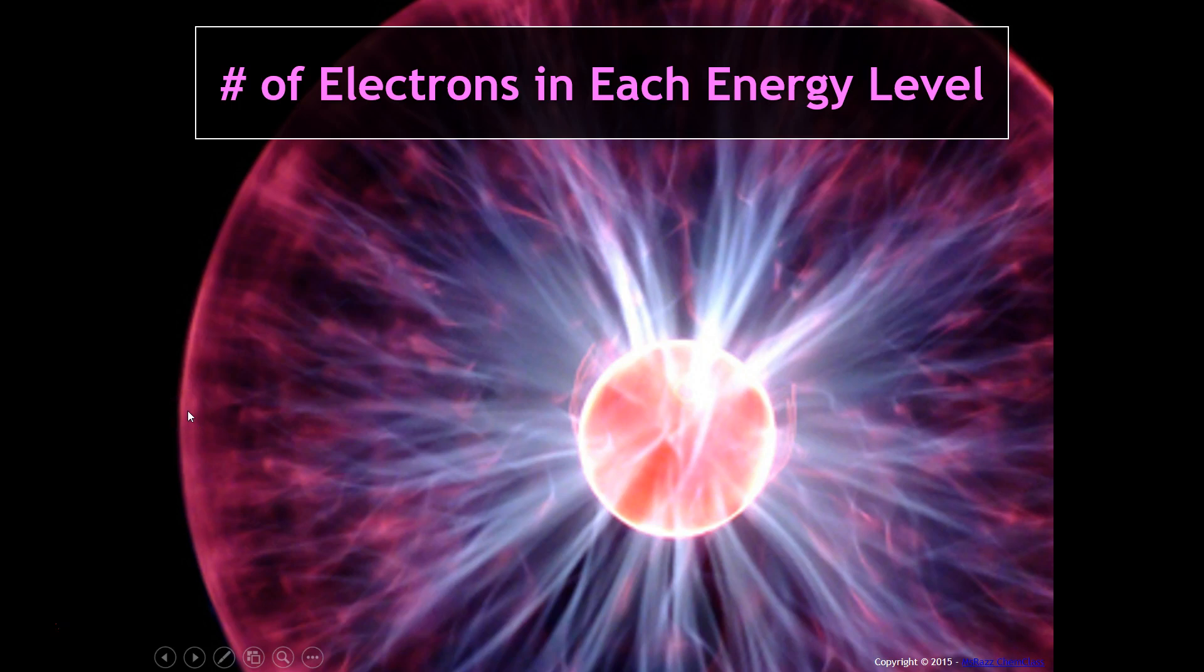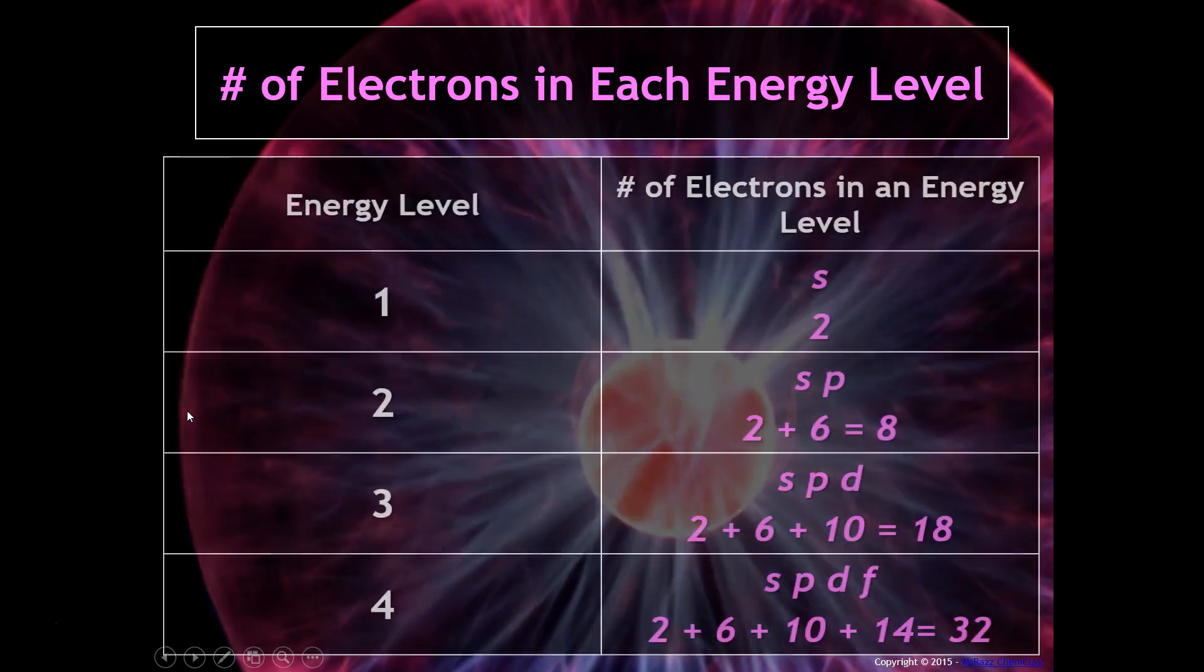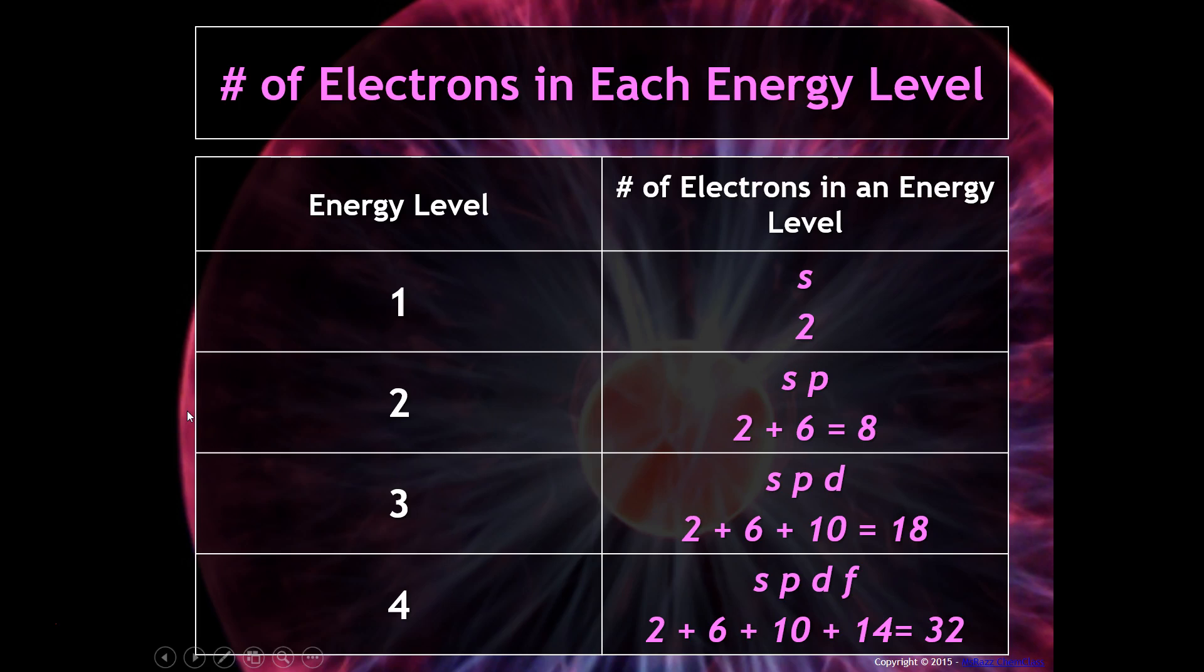Let's talk about the number of electrons in each energy level. You probably remember from middle school that you drew something called a Bohr model, which was similar to the picture you saw earlier in this video. You saw the nucleus with rings around it. You may remember that the first ring could hold two electrons, the second ring could hold eight, and the third ring could hold eighteen. Well, these are where those numbers come from.